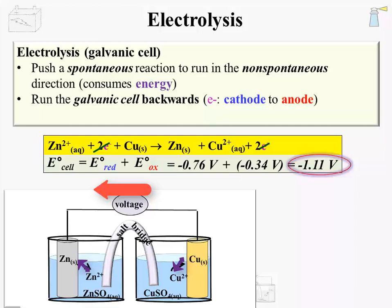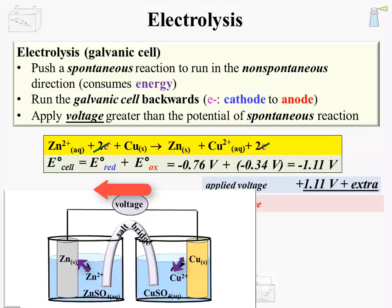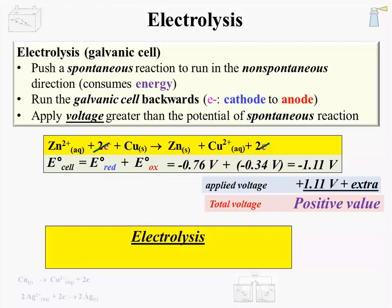For electrolysis to proceed, a voltage energy is applied that is greater than the potential of the spontaneous reaction. The spontaneous or favorable reaction had a potential of 1.11 volts, so for electrolysis to proceed, an applied voltage exceeding 1.11 volts is required. In the end, the total voltage — the negative potential of the reverse reaction plus the applied voltage from the power source — must be a positive value. For a reverse reaction to occur in electrolysis, the total standard cell potential is the EO reduction and EO oxidation of the reverse reaction (a negative potential) plus an applied voltage from an external source; the total potential of the process must be positive. That is the only way to make an unfavorable reaction occur.